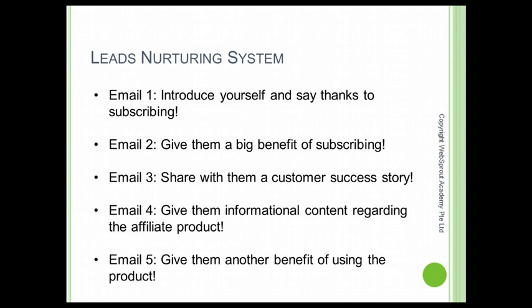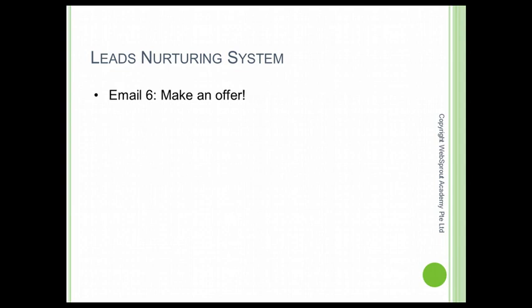Email number five: give them another benefit of using the product that you are promoting. Email number six: you can officially sell them on the affiliate product that you are focusing. For example, if it's a lower blood pressure product, you can tell them currently if they buy, what's the price, what offer, what bonus will they get.